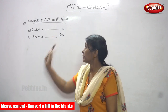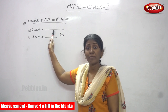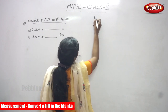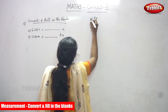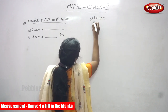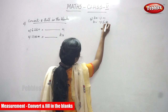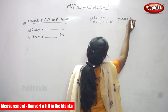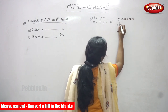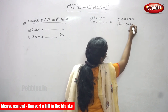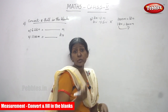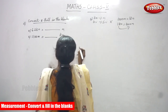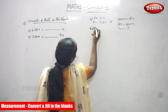Now we are going to convert and fill in the blanks. The first question is 6.2 kilometers converted into meters. Kilometer is the bigger unit and meter is the smaller unit. Bigger unit to smaller unit, you have to multiply. The formula is: 1000 meters is equal to 1 kilometer, or 1 kilometer is equal to 1000 meters.